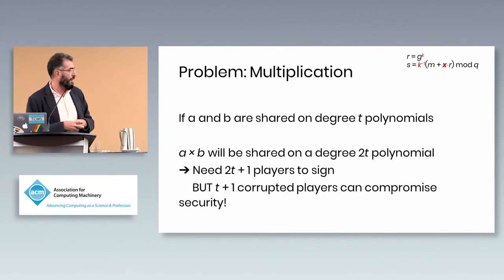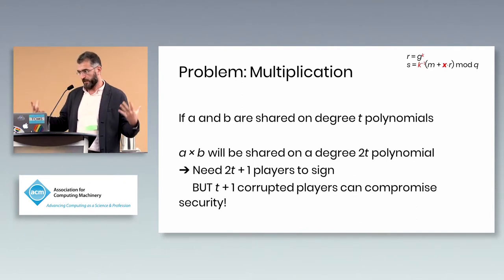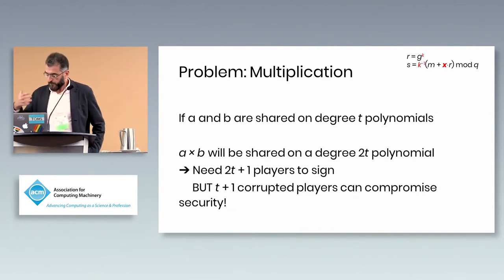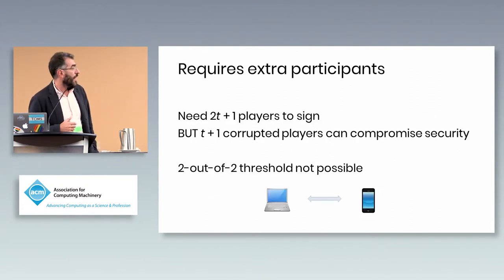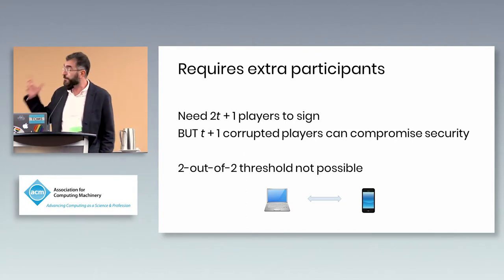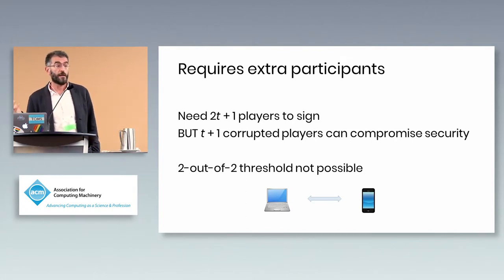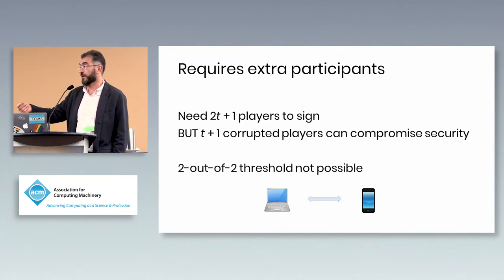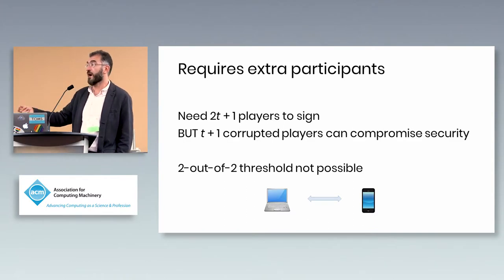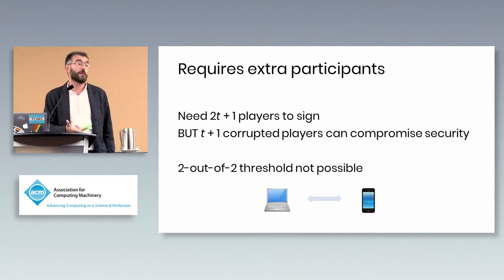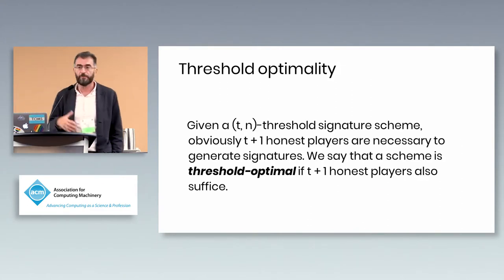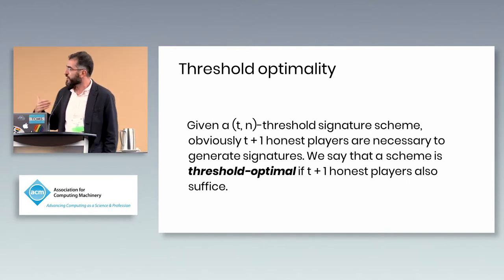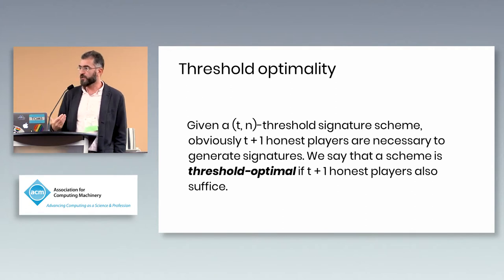Bitcoin companies are very concerned about this doubling, since it requires significantly more servers. Theoretically, we also lose threshold optimality — for example, with t=1 (one person shouldn't sign, two should), my old paper would require three people. We want dishonest-majority threshold optimality: even if t parties try to forge a signature, t+1 should be able to sign.